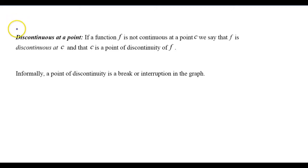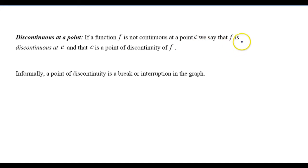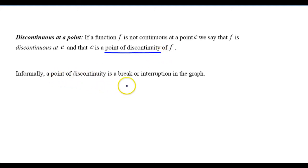It's not always going to be the case that a function is continuous, and when it's not, we say it is discontinuous at a particular point. If a function f is not continuous at a point c, then we say f is discontinuous at c and that c is a point of discontinuity of f. Informally, a point of discontinuity is a break or an interruption in the graph at a particular x value.